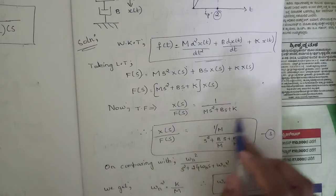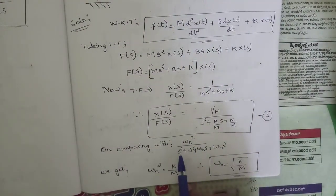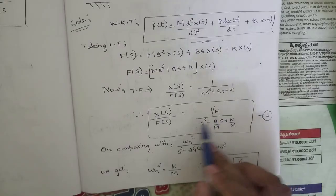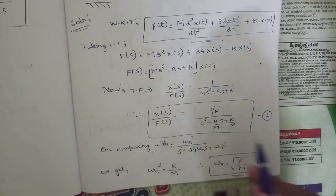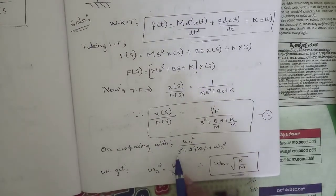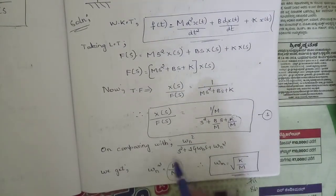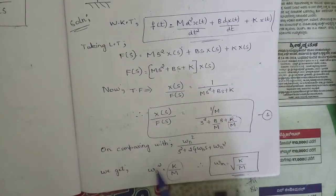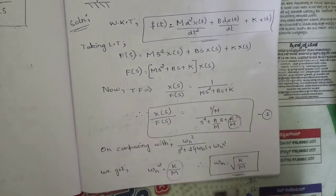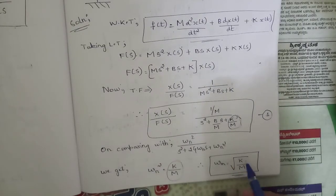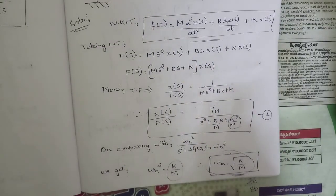Converting the transfer function to standard form: X(s)/F(s) = (1/m) / (s² + (b/m)s + k/m). Comparing with the standard form ωn²/(s² + 2ζωns + ωn²), we identify that ωn² = k/m, so ωn = √(k/m). This is the first relation we will use later.